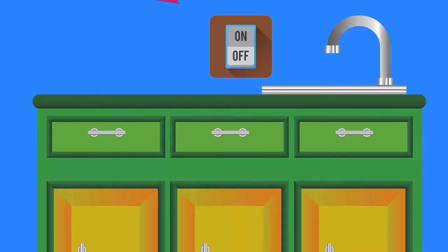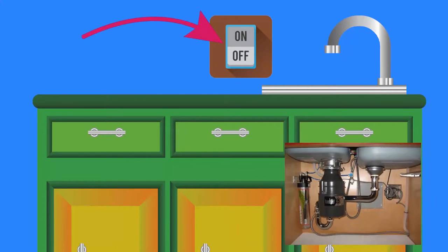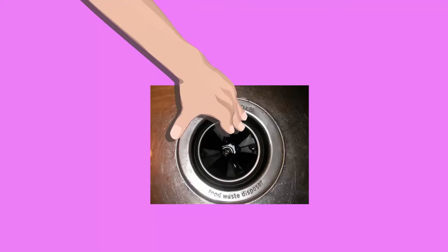Instead, first turn the switch to the off position. Under the sink, look for the plug connected to the disposal and unplug it. Then you are safe to use your hands.